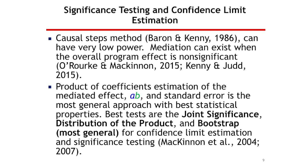The best tests are the joint significance test — simply testing whether A is significant and B is significant. Methods that deal with the unusual distributions of the product of two coefficients include the distribution of the product approach or the bootstrap. You can use those for confidence limit estimation to determine whether the mediated effect you have is due to chance or whether it seems to be something real.